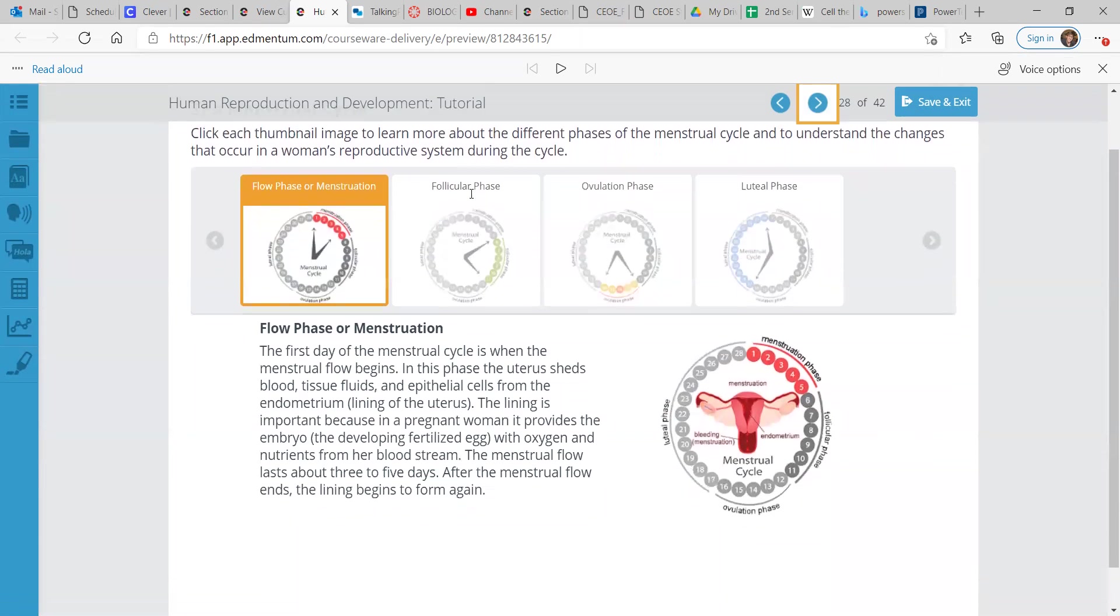Next, the menstrual cycle. We have flow phase or menstruation. The first day of the cycle is when the menstrual flow begins. In this phase, the uterus sheds blood, tissue fluids, and epithelial cells from the endometrium, which is the lining of the uterus. The lining is important because in a pregnant woman, it provides the embryo, the developing fertilized egg, with oxygen and nutrients from her bloodstream. The menstrual flow lasts about 3 to 5 days on average. After the flow ends, the lining begins to form again.